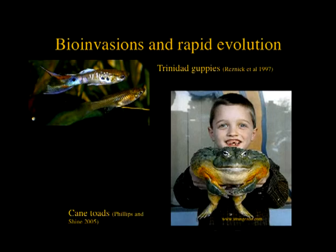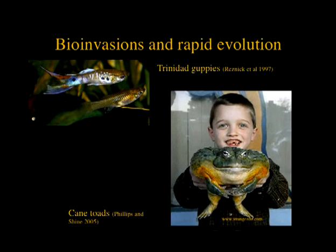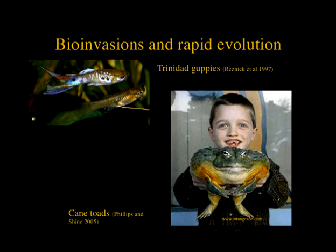Similarly, cane toads were introduced to Australia and have marched across the continent over the last 40 or 50 years. The cane toads are poisonous and kill any predator that eats them. Snakes that consume cane toads end up dying and are removed from the population. The snakes that remain have tended to have a narrower gape. So cane toads have limited or narrowed the size of native snakes through natural selection — an example of invasive predators having an effect on native communities.